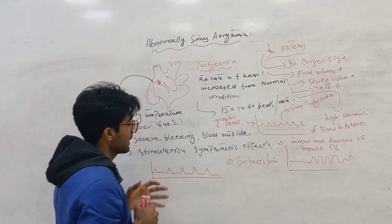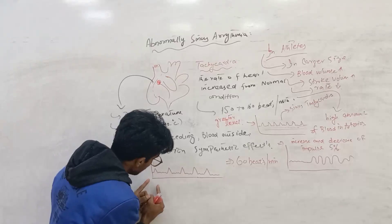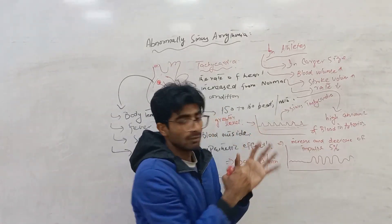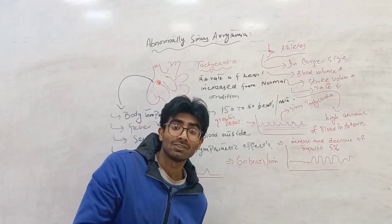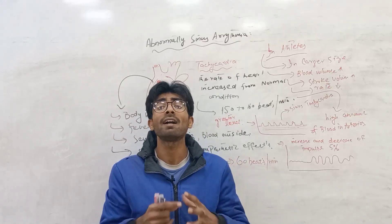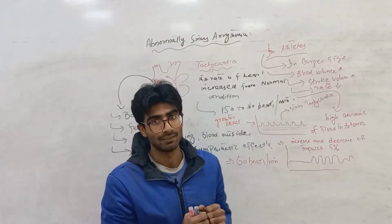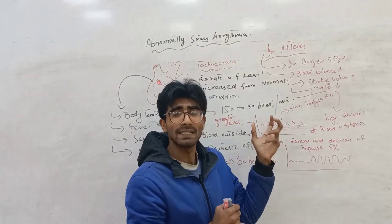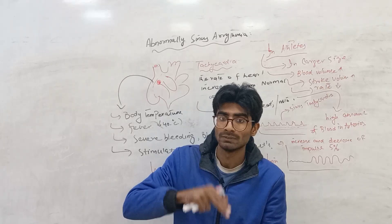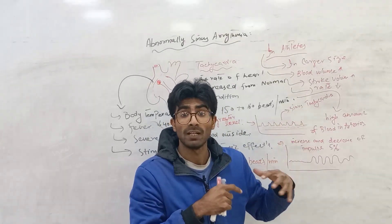In sinus bradycardia, when beats are around 60 beats per minute, it is a slow heart rate, and the impulse is produced in a slower amount. In athletes who exercise regularly, the amount of blood in the heart increases due to the larger heart size. When blood volume increases in the heart, heart rate decreases, stroke volume and blood volume increase, and blood pressure also decreases.